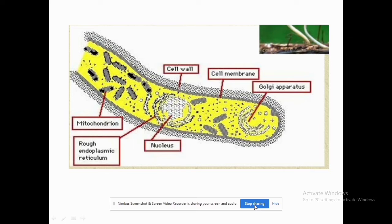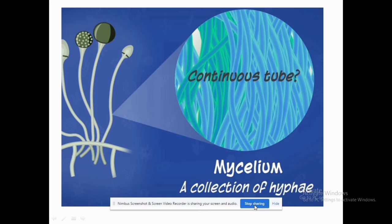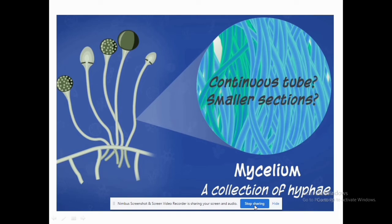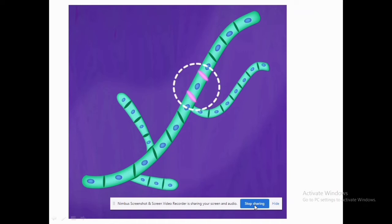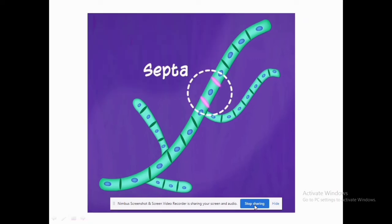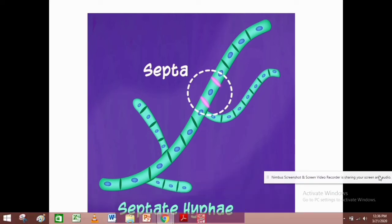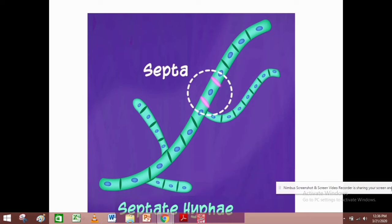You may wonder whether the mycelium is a continuous tube or divided into smaller sections. It can be both. If the mycelium is divided into smaller sections, the dividing walls are known as septa or septum, and the fungus is called a septate fungus or has septate hyphae. If it is a continuous tube, it is referred to as aseptate.